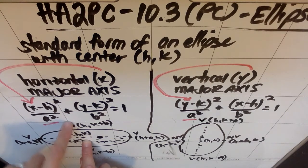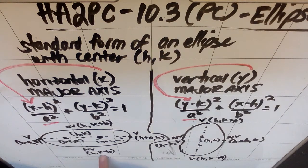So if the center was h comma k, this will be h comma k plus b because I moved up b units, and this will be h comma k minus b because I moved down b units.